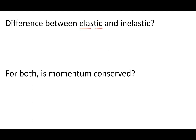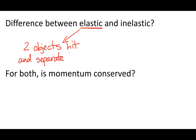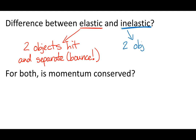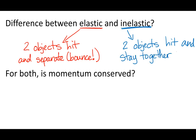For a 100% fully elastic collision, the two objects hit and separate — in other words, they bounce off each other. A fully 100% inelastic collision is where the two objects hit and they stay together or stick together. That is a rough definition, but the one we really need to focus on for this class. Just realize there is more specifics into what is an elastic versus inelastic collision.